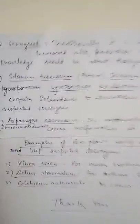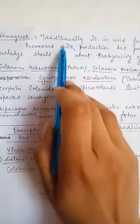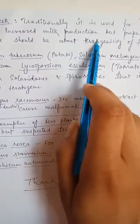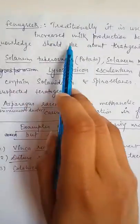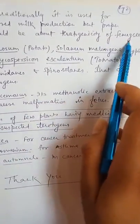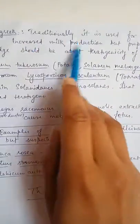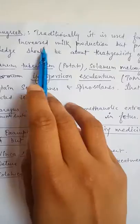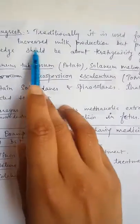The next example is fenugreek. Traditionally it is used to increase milk production during pregnancy, but proper knowledge should be required about the teratogenicity of fenugreek. It is used for milk production during pregnancy, but we must be aware of its teratogenic potential.